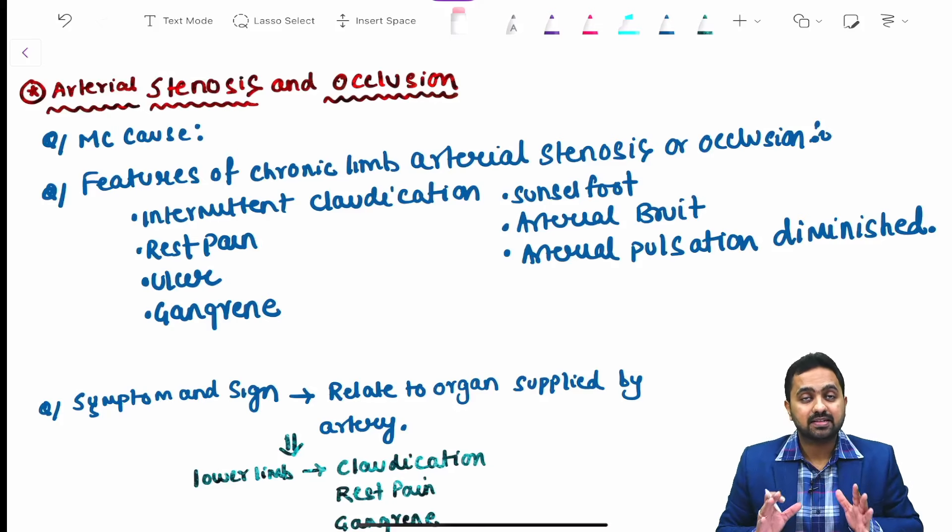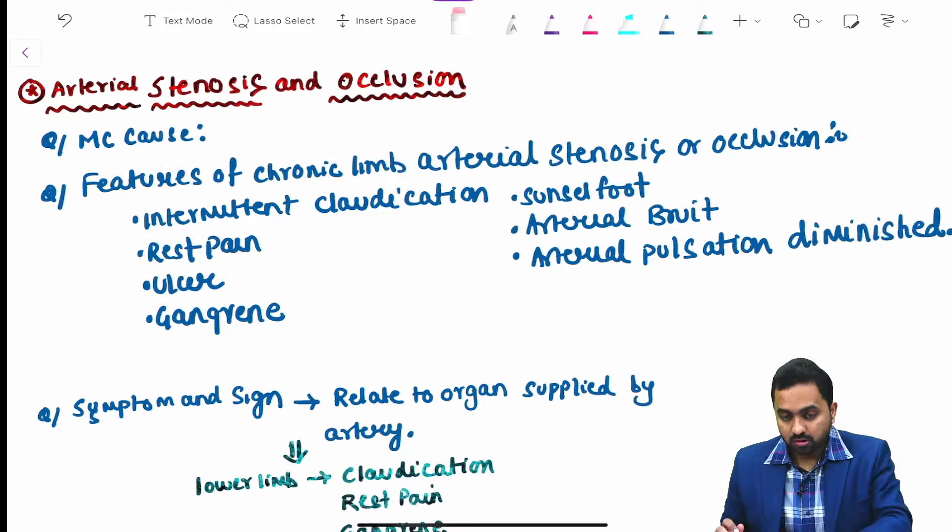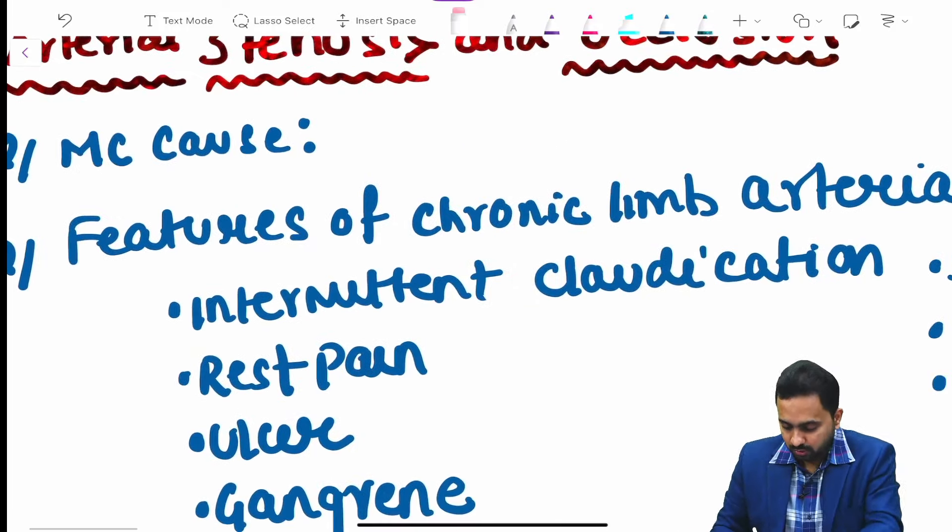Hi friends, in this video we shall be discussing arterial disorders. We begin our discussion with arterial stenosis and occlusion. What is the most common cause? The most common cause is atherosclerosis.